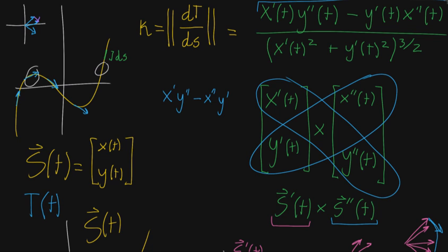And the first thing we did is we noticed that this numerator corresponds to a certain cross product, the cross product between the first derivative and the second derivative of the function parametrizing the curve.